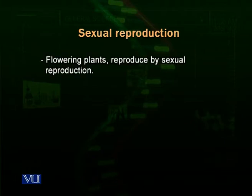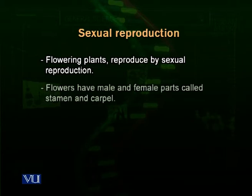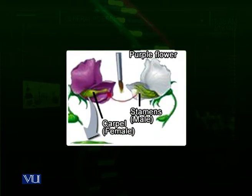Sexual reproduction in flowering plants — plants that make flowers — involves flowers as the reproductive parts. Flowering plants are the more advanced forms of plants. Flowers have both male and female parts in the same flower. The male part is called the stamen and the female part is called the carpel. You can see in the diagram that one flower shows the stamen and another shows the carpels separately.